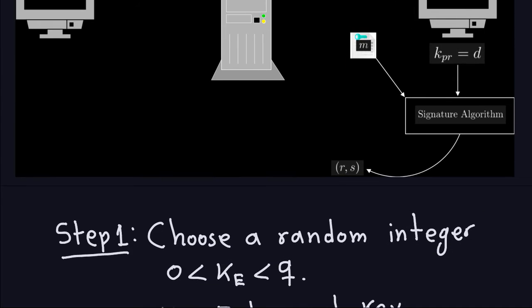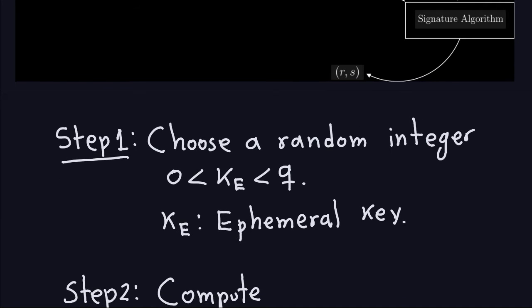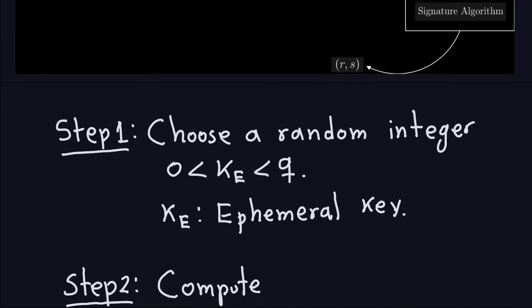This is the algorithm for how to generate the signature. The first thing we do is produce an ephemeral key — by the name, you're supposed to use this only once if possible. It should be a true random number between 0 and Q, where Q is that prime number of 160-bit length. So we choose the ephemeral key — that will be step number one.